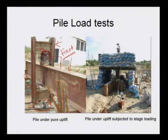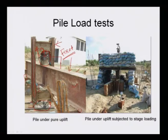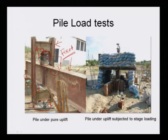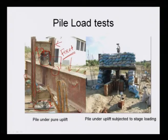Once this is fixed, applying load by means of the hydraulic jack will push the hollow girder. Since the hollow girder is already fixed to the main pile head, it will automatically impose a reverse force on the girder through the gap, causing the pile to come out from the ground.